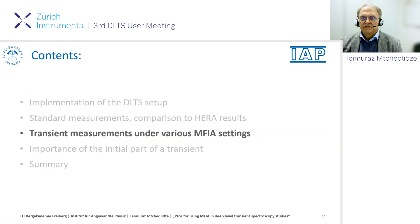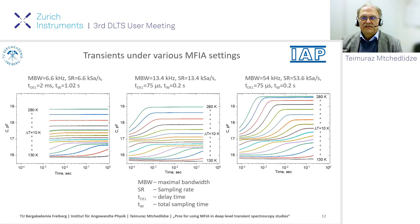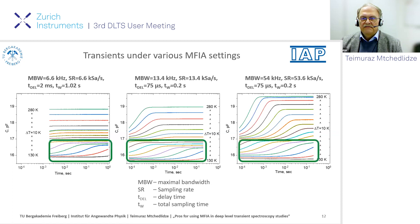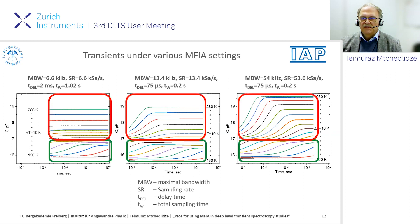To clarify what is different with MFA measurements for DH6 traps, let's look at transients at various temperatures and settings. The slide presents recorded capacitance transients directly detected by MFA at various temperatures for various settings. We varied the maximal bandwidth, which is the reverse value of the time constant, and the delay time. The sampling rate parameter followed the bandwidth. One can see that for the temperature range 130–180K, in all cases, transients have the same amplitude. But there is a huge difference for the 200–180K range, where the transients related to the second trap were detected.